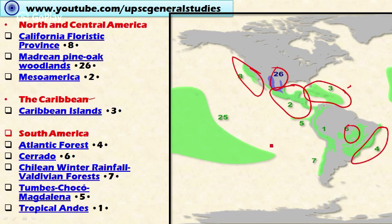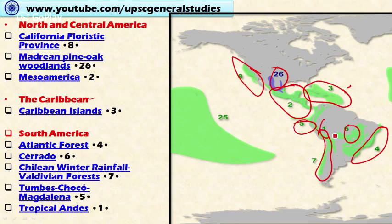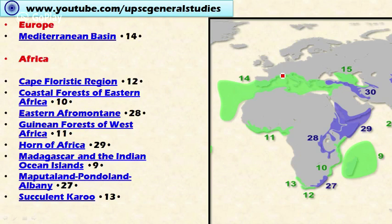In South America, we have the Atlantic Forest and Cerrado in central South America, and the Chilean Winter Rainfall Valdivian Forest along the coasts of Chile. These are the biodiversity hotspots in the Americas — both North and South America, including the Caribbean Islands.